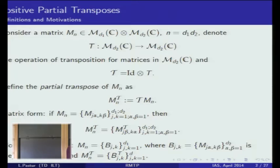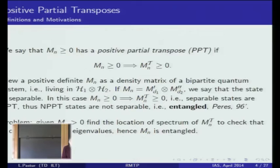In standard matrix form, we use two indices instead of one: the first space is indexed by Latin characters and the second by Greek. For a given matrix, the partial transpose just interchanges the Greek indices alpha and beta. This is the matrix form of the operation.